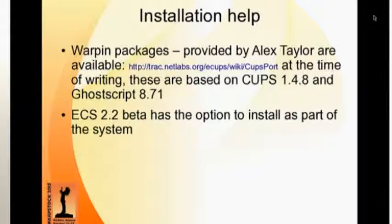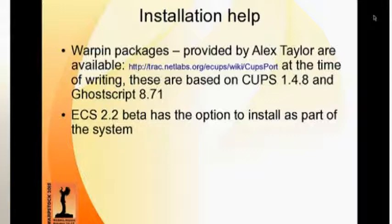For installation help: Alex Taylor has done a lot of work packaging this stuff, which makes installation much easier. These are the packages used for eComStation 2.2, which has an option to include CUPS. At the time of writing, those warpins were based on CUPS 1.4.8 and GhostScript 8.71 — nothing wrong with that. In terms of functionality there's no real impact from the older releases. ECS 2.2 can install these as part of the system, and from the slides I saw this morning, it looks like BlueLion will have the option to install it as well.